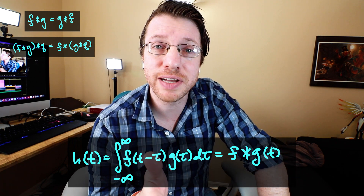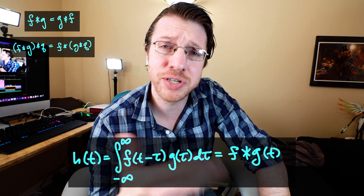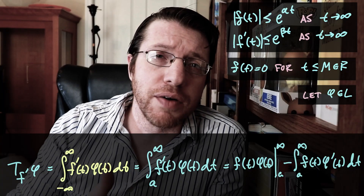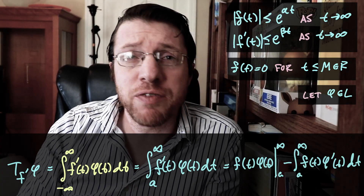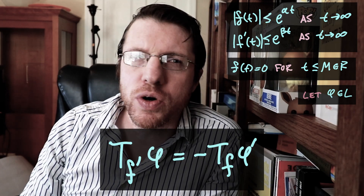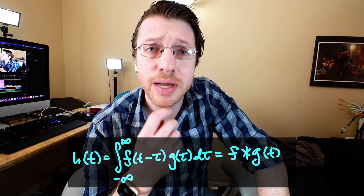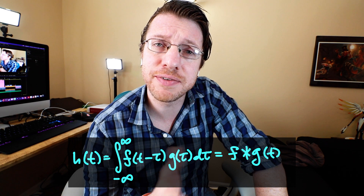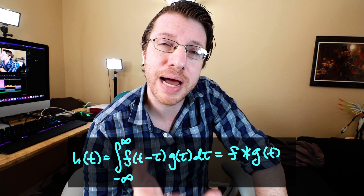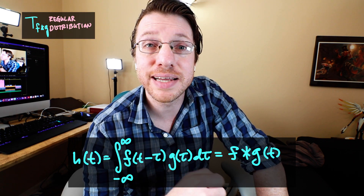We'd like to take this convolution definition and find some way to analogize it to distributions, much the same way that we analogized differentiation of regular distributions to all distributions. So we're going to take this convolution f★g and see what happens when we cast it as a regular distribution.